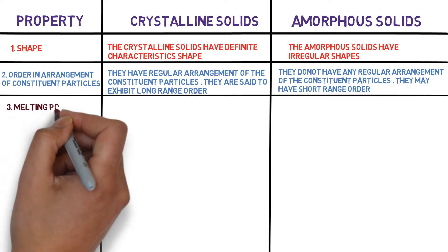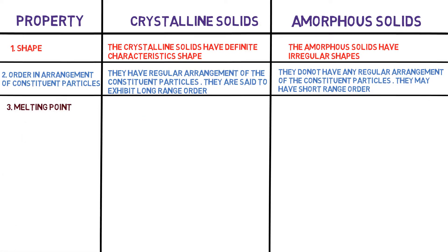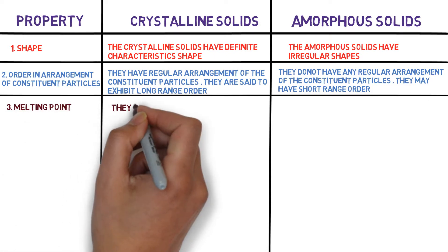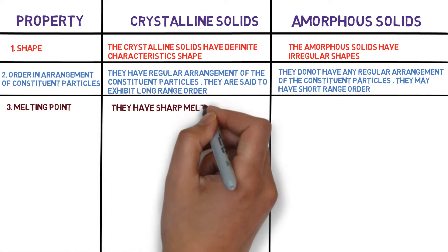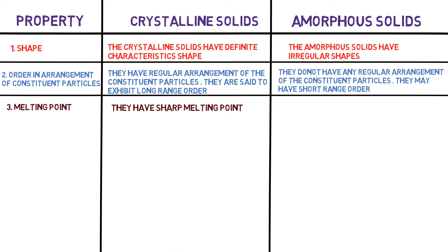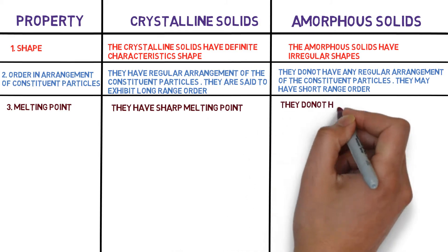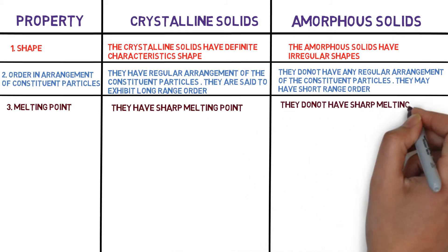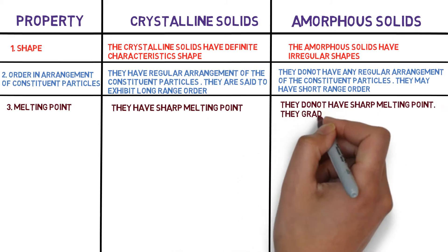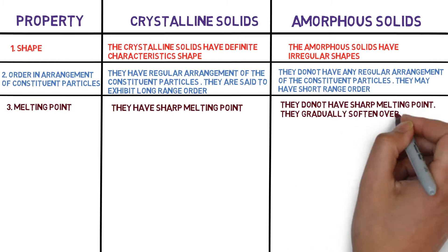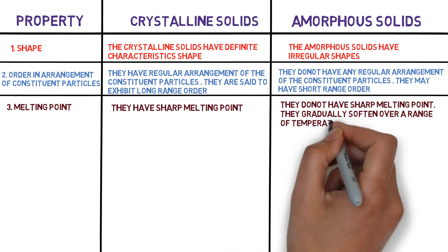The third property is melting point. Crystalline solids have sharp melting points, whereas amorphous solids do not have sharp melting points — they gradually soften over a range of temperature.